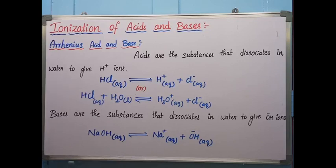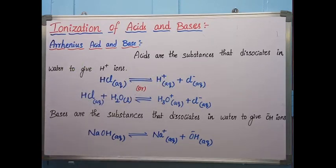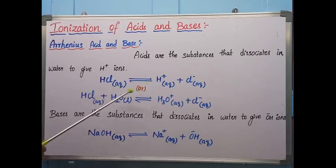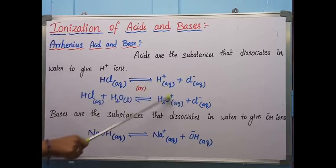Firstly, let us see about Arrhenius acid and base. According to Arrhenius theory, acids are substances that dissociate in water to give H+ ions. For example, HCl when added to water gives H+ and Cl− ions. As it is producing H+ ions, we call it an acid. These H+ ions are highly unstable or more reactive in nature.